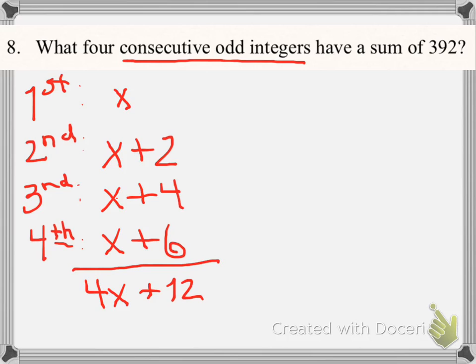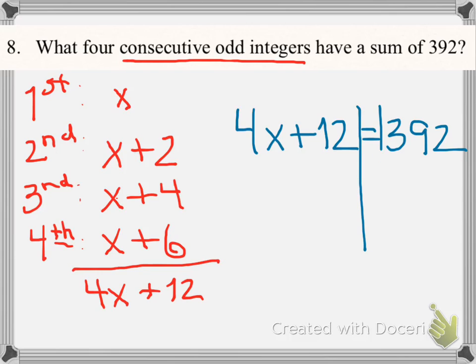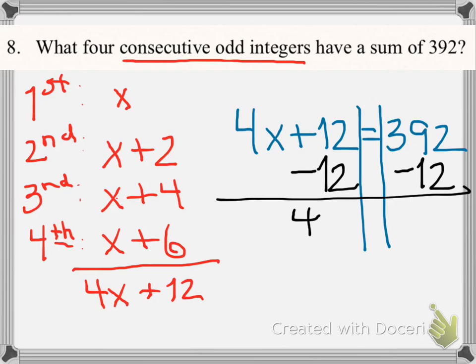That 4X plus 12 is the sum, matching with 392. So I'll write 4X plus 12 equals 392. Then I'll solve the equation. First, I have to move the 12, so I'll subtract 12 on both sides. That gives me 4X equals 392 minus 12, which is 380.